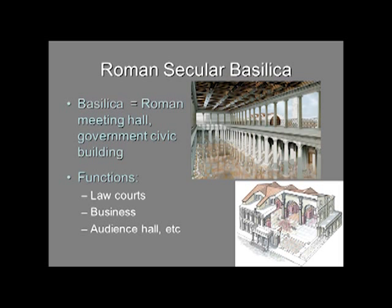They had to find another model for a Christian church, and they found it in the Roman secular basilica. Remember, these people are Romans — perhaps very patriotic Romans. The law court wouldn't have the same repugnance as, say, a statue to a god. This is where Romans would meet, have civic functions, and hold law courts. The basilica — the government and civic building of ancient Rome — was where you conducted business, held audience halls, and law courts. These became the architectural model for the Christian church, with some changes to fit Christian worship.